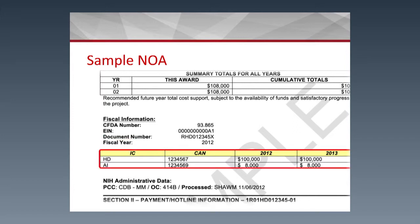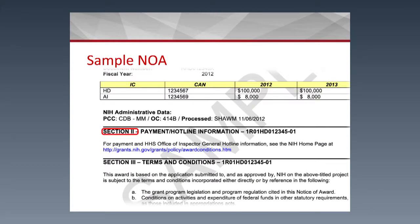On the last part of Section 1, you will find the information about the institutes funding this grant. In this example, there are two institutes: HD, which stands for NICHD, providing $100,000, and AI, Allergy and Infectious Diseases, providing $8,000. Again, this is just an example.